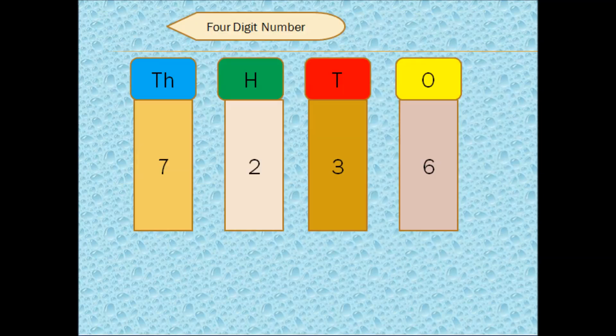So to form a 4 digit number, we will place a 1000s column on the left side of the 100s column. So in a 4 digit number, we will have 1s place, 10s place, 100s place and 1000s place.